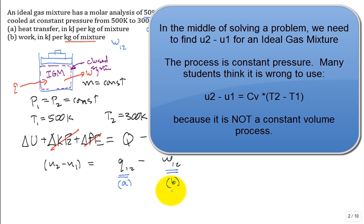Do I stand a chance of being able to evaluate U2 minus U1? It starts at 500, ends at 300. Maybe I would say, okay, I'm going to use a model that it's the C sub V times T2 minus T1. True or false?